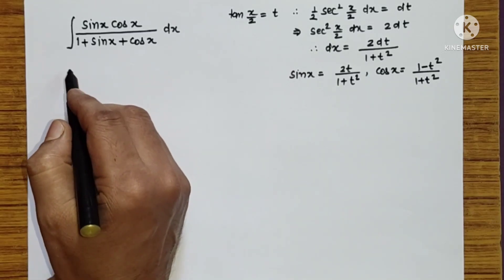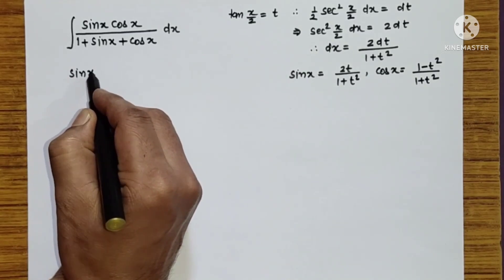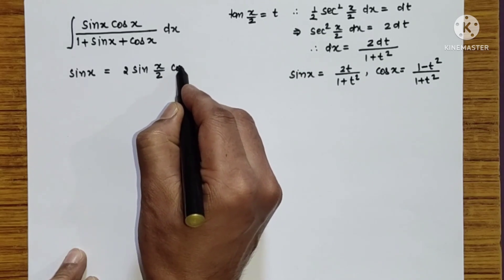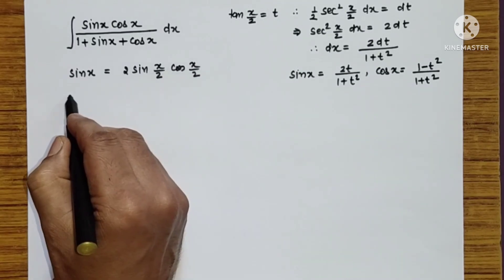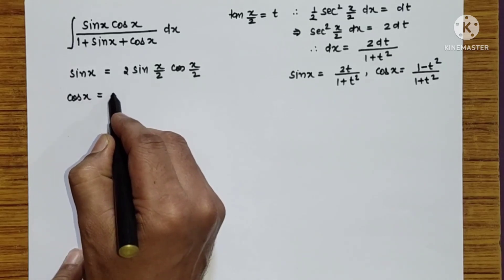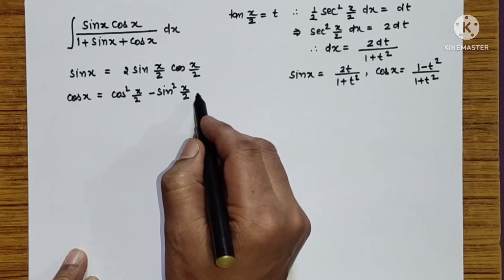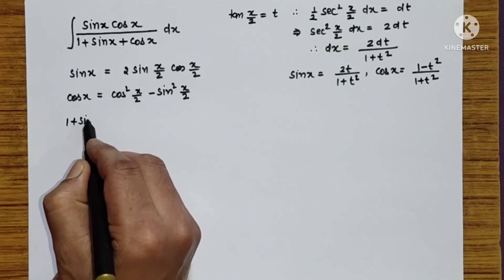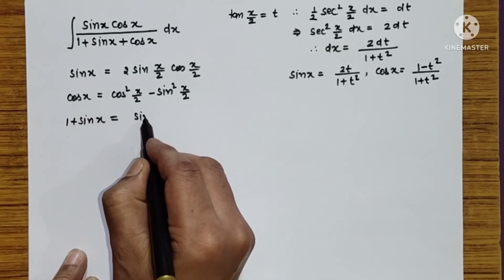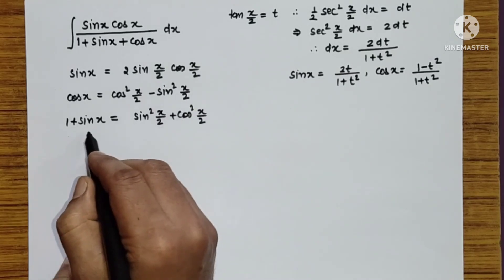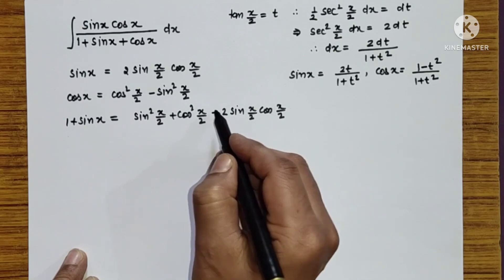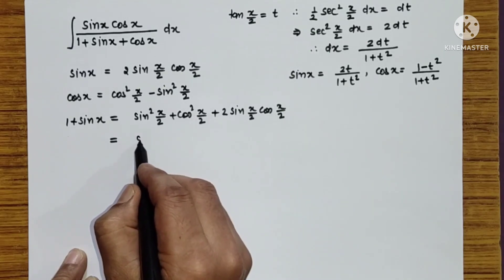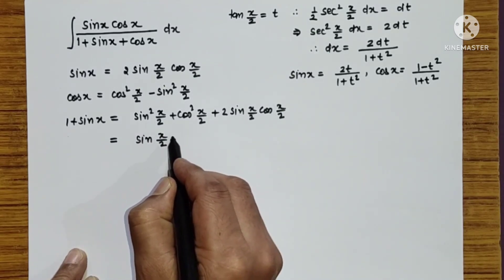As we know, sin x can be rewritten as 2sin(x/2)·cos(x/2). Cos x after factorization becomes (cos(x/2) plus sin(x/2))(cos(x/2) minus sin(x/2)). And 1 plus sin x can be rewritten: since sin x equals 2sin(x/2)cos(x/2), the expression 1 plus sin x is a perfect square — it equals (sin(x/2) plus cos(x/2)) whole squared.